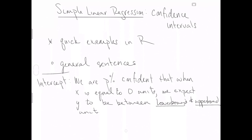So here is my general sentence for an interpretation of an intercept confidence interval. We are p percent confident that when x is equal to zero units, we expect y to be between some two numbers remembering the units.